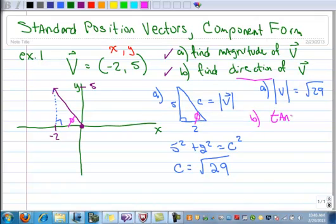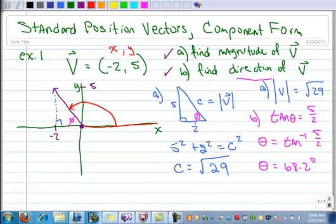So the tangent of theta, well that's the opposite side to the adjacent side. And then using our inverse tangent notation, so the inverse tangent of 5 over 2, make sure your calculator is in degrees. And then when you do this, you get 68.2 degrees. So the position is always measured from the x axis in the positive direction. So the position or the direction of my vector is actually this angle right here.